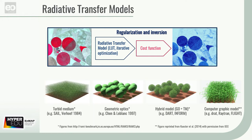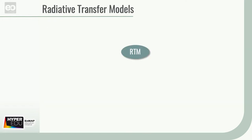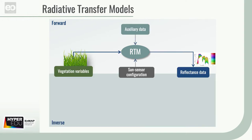There are different exemplary groups of RTMs, and we'll look at some in more detail later in this video. But first, what does an RTM do in general? In the forward mode, the RTM is built to simulate vegetation reflectance.